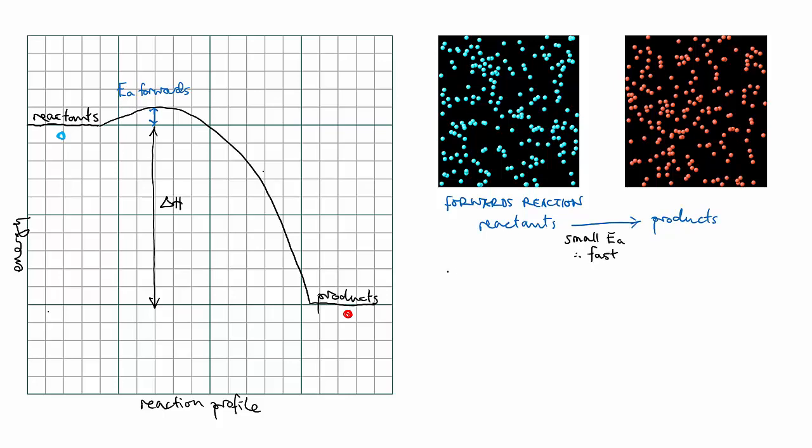If the reaction were reversible, it would mean that it could also proceed in the reverse direction. For this reaction, that would mean turning the reds back into the blues. But look at the energy profile in this direction. To get from red to blue, a much greater activation energy has to be met. This means the reaction would be very slow, possibly so slow as to be unmeasurable.